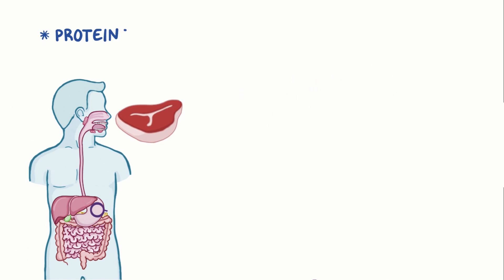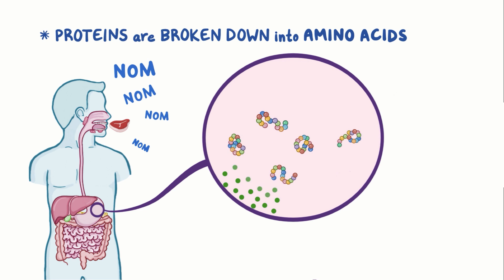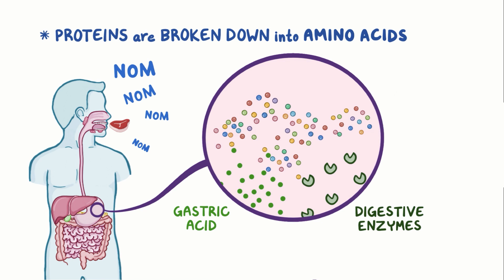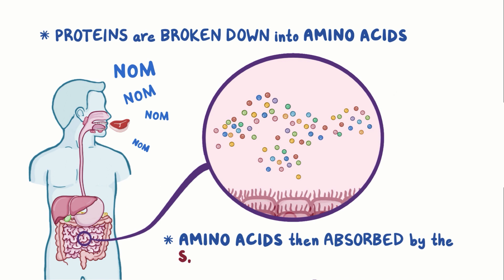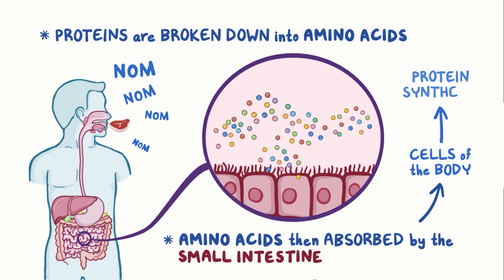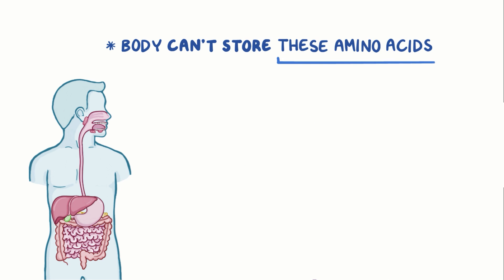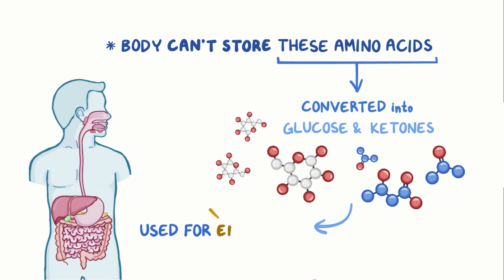The proteins you eat are broken down into amino acids in the gastrointestinal tract by gastric acid and digestive enzymes. The amino acids are then absorbed by the small intestine into the bloodstream, and then they travel to the cells of the body where they're used for protein synthesis. Since the body can't store these amino acids, any excess amino acids are converted into glucose or ketones and used for energy.